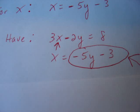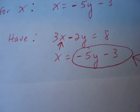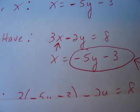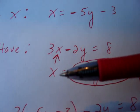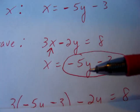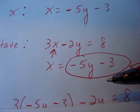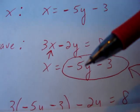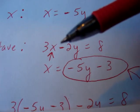Now, since this is called substitution, we substitute our new found value of x into the other equation. So right here, we have found x by itself. What is x? x is negative 5y minus 3. So instead of saying x here, you're going to replace x with what we just found, negative 5y minus 3.